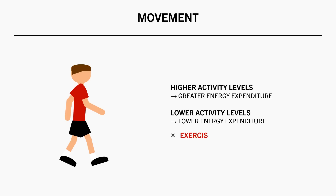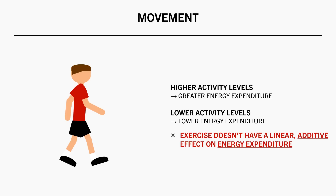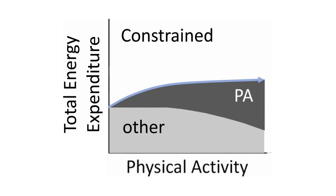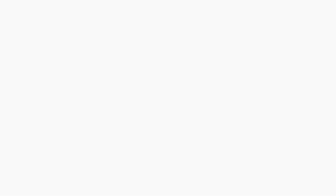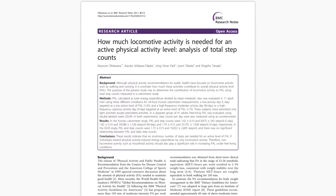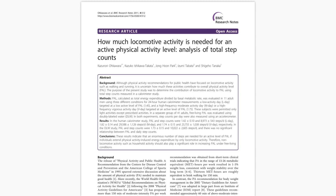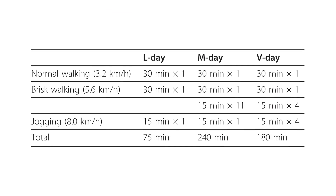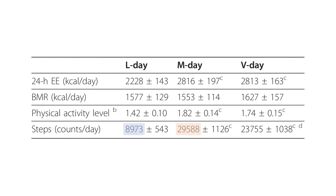We should note that more movement doesn't have a linear additive effect on total daily energy expenditure. This study has termed this phenomenon the constrained model of energy expenditure — as more exercise is performed, other components of energy expenditure are down-regulated. This study compared the effects of different physical activity levels on energy expenditure. Eleven adult men underwent three different exercise routines resulting in total daily step counts of 9,000, 30,000, and 24,000 respectively, but energy expenditure wasn't increased in proportion with activity levels.